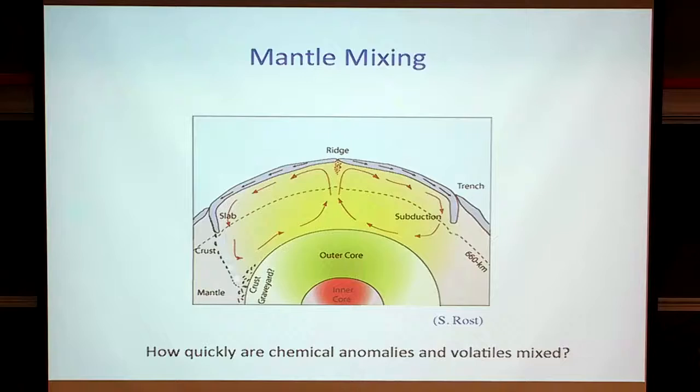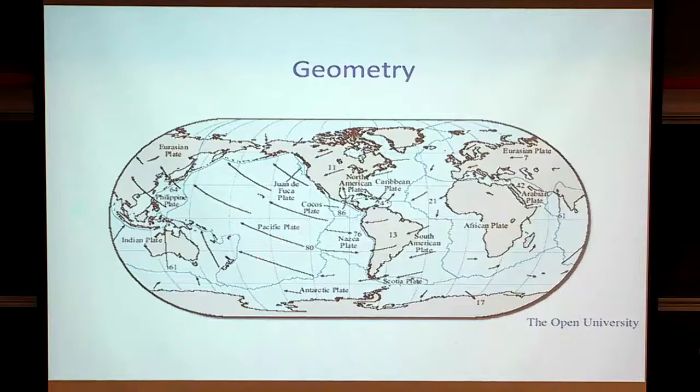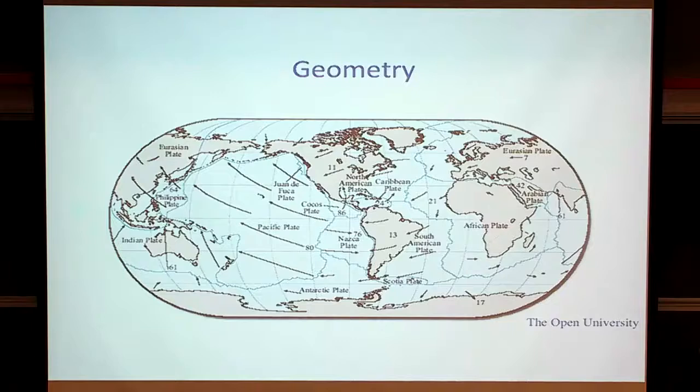Geometry is another complication, more specific to Earth. Requiring plate motions to be rigid at the surface imposes geometrical constraints on flows. Anywhere a ridge intersects a subduction zone means you are subducting material with virtually zero age — so in that environment we are actually taking down material that is probably buoyant, purely as a geometric consequence of plate tectonics.